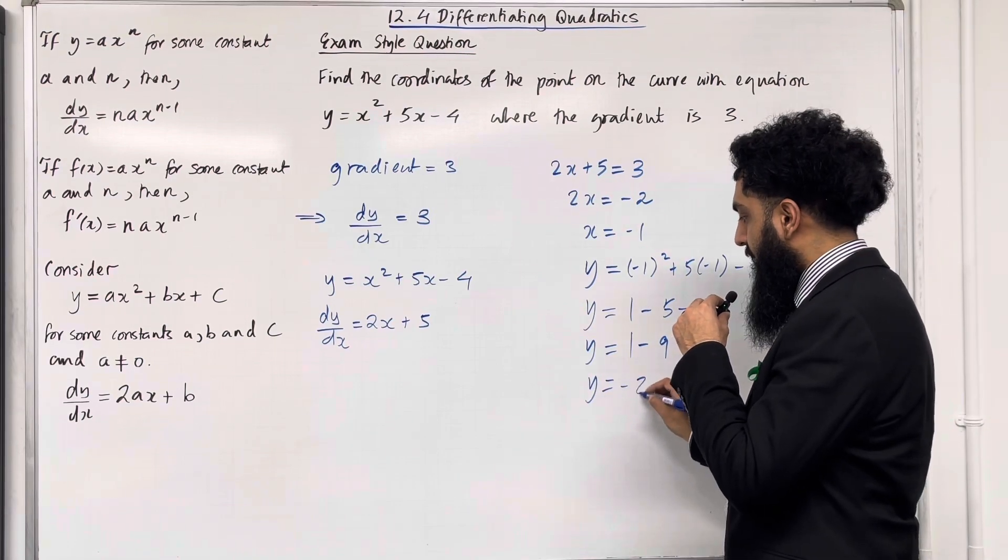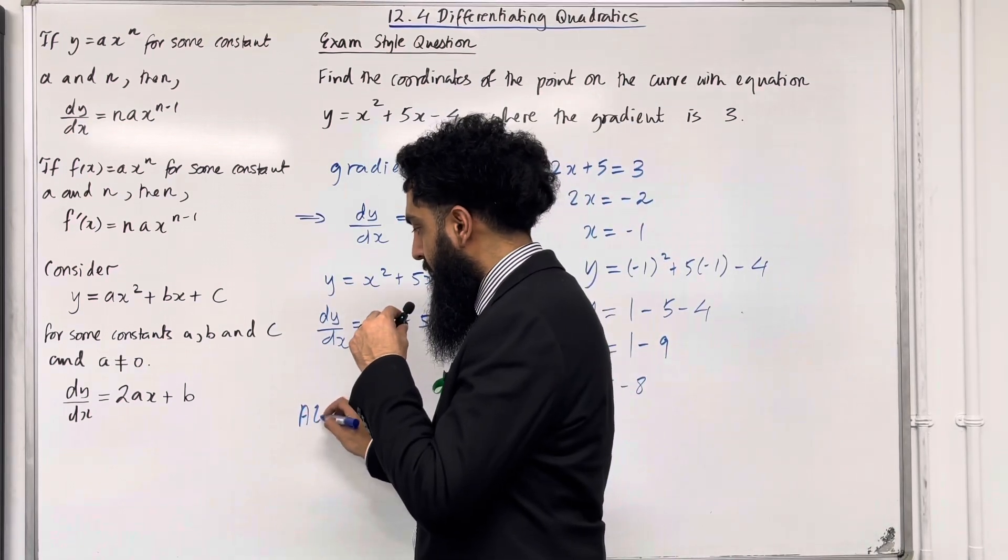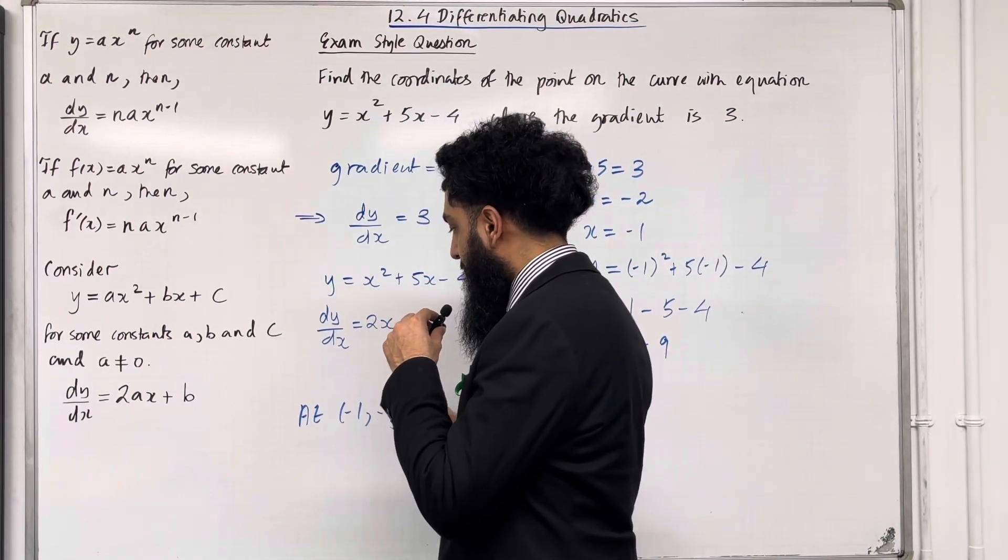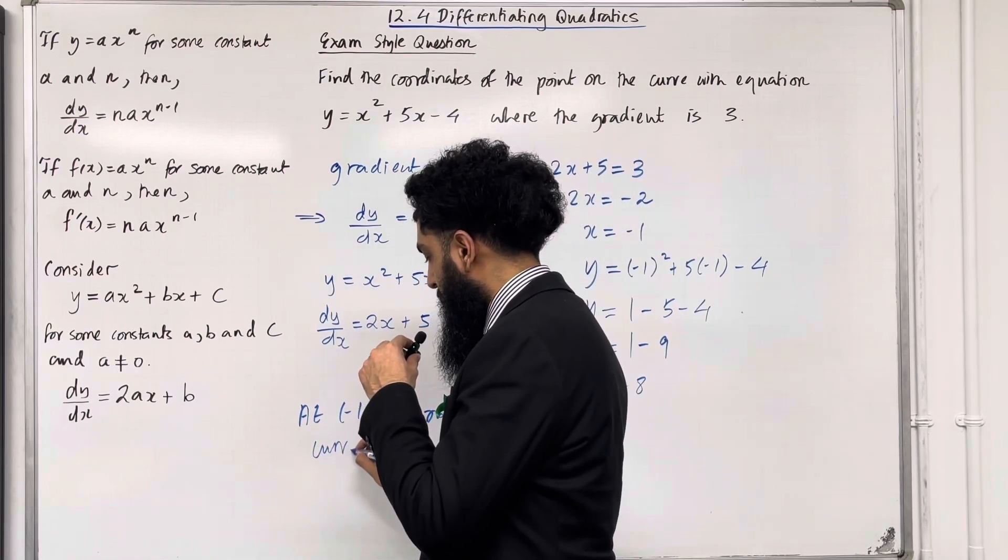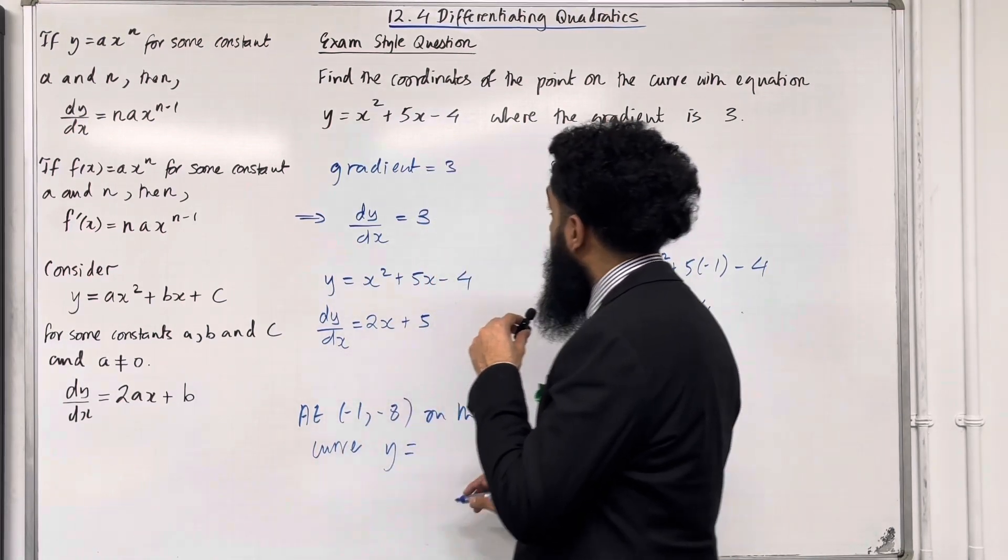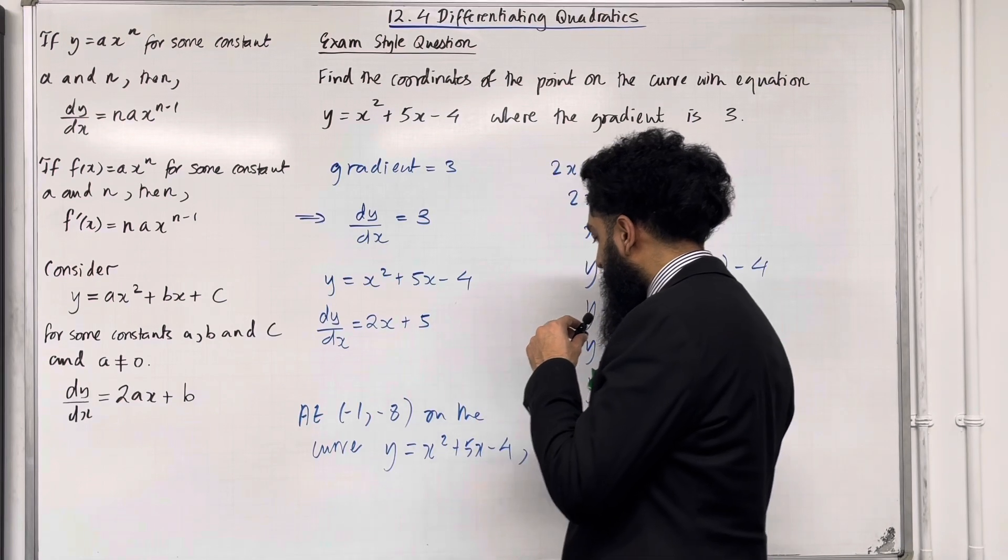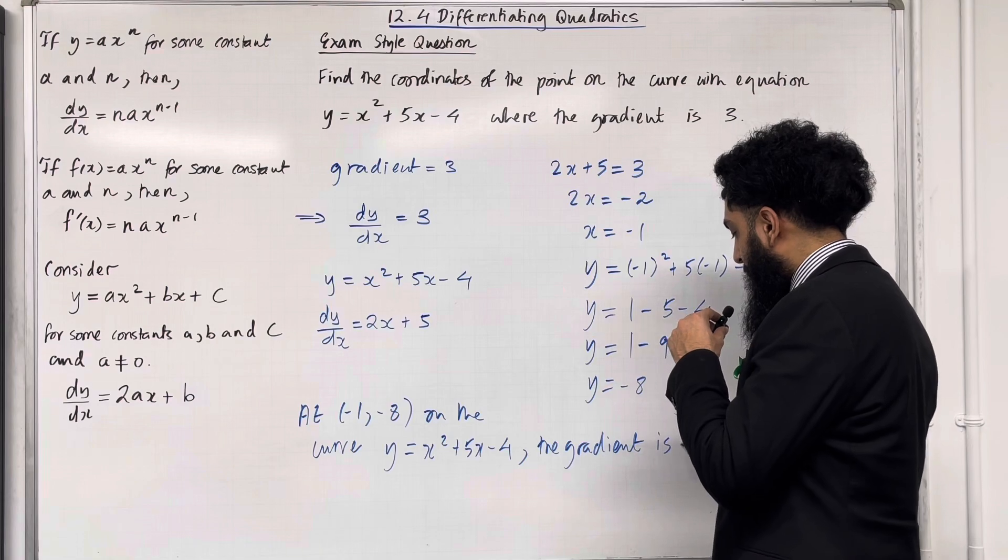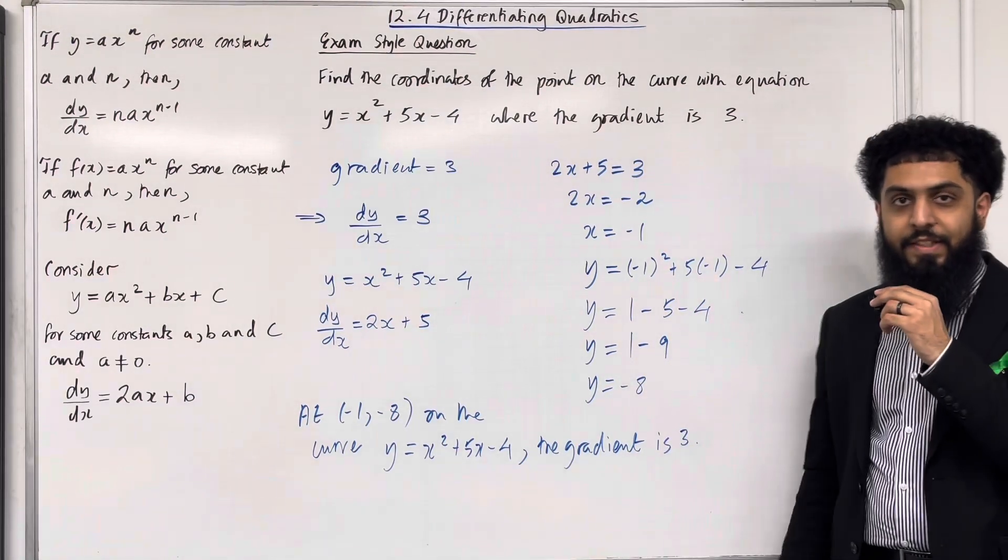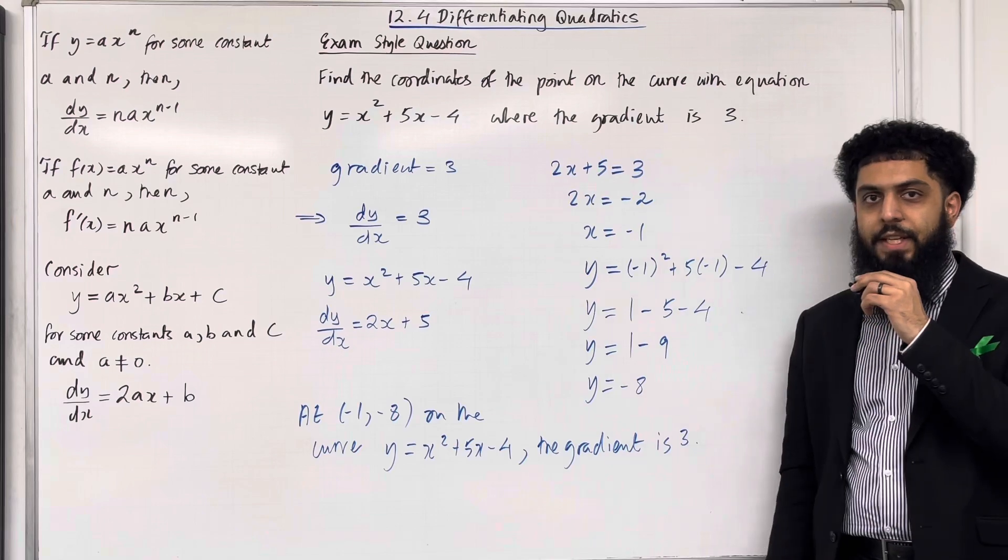So y is equal 1 minus 9, hence y is equal minus 8. So at the point minus 1 minus 8 on the curve y equals x squared plus 5x minus 4, the gradient is 3. This completes the exam style question, and this teaching video is 12.4 differentiating quadratics.